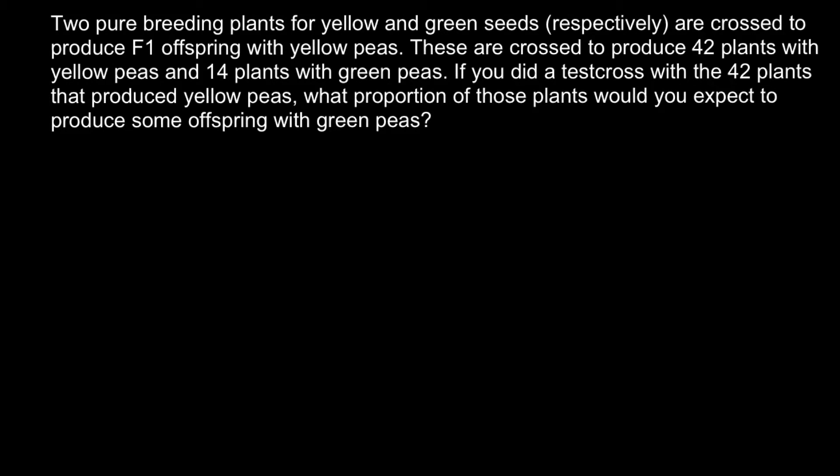Today's problem: two pure breeding plants for yellow and green seeds, respectively, are crossed to produce F1 offspring with yellow peas. These are crossed to produce 42 plants with yellow peas and 14 plants with green peas. If you did a test cross with the 42 plants that produce yellow peas, what proportion of those plants would you expect to produce some offspring with green peas?